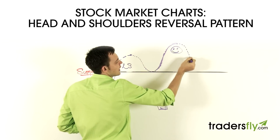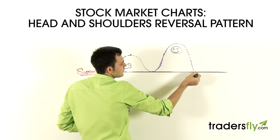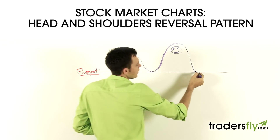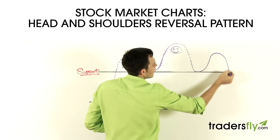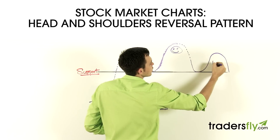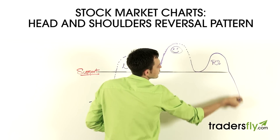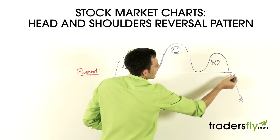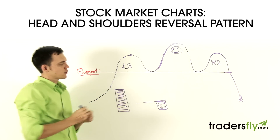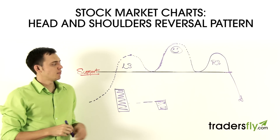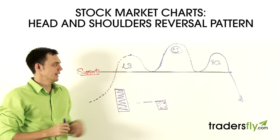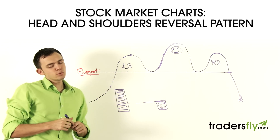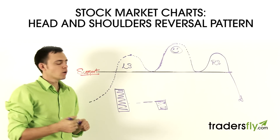So it starts to go back down, bounces once again off of that support, goes to that right shoulder this time, and eventually trickles back down. Now, one cool thing to understand about this head and shoulders pattern is this is the neckline. And usually — not always, but usually — in order for confirmation that it was a head and shoulders pattern...